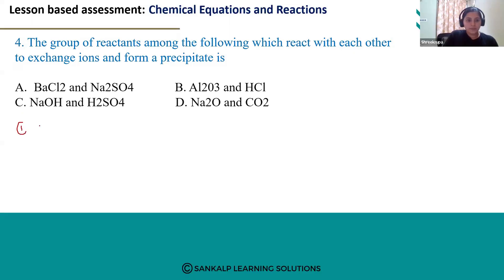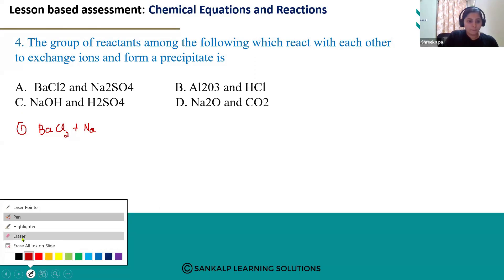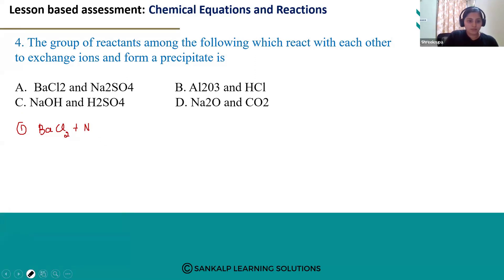First one is BaCl2 plus Na2SO4. These two compounds react together to produce BaSO4 plus NaCl. These are the products.